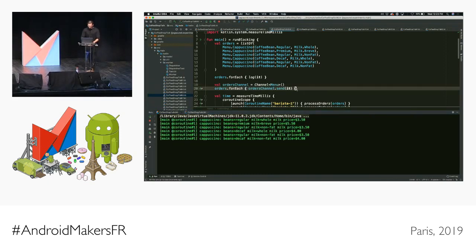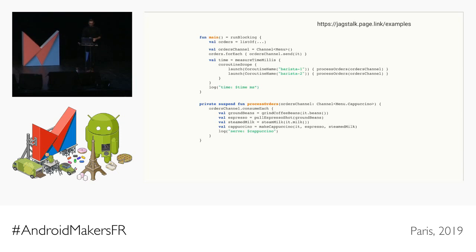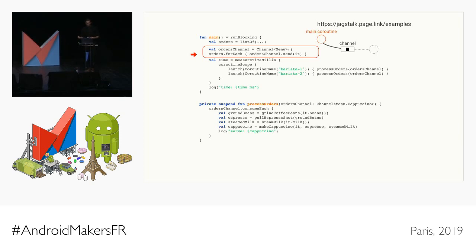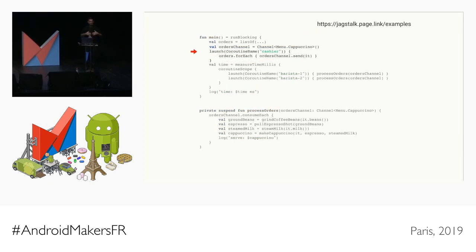To fix the deadlock, we launch a new cashier coroutine and inside that coroutine we start writing to the channel. When the cashier writes to the channel the first time, it suspends the cashier coroutine — but that means the main coroutine is free to continue operating. Running this new version, it looks a lot better: Barista 1 is processing a $3.50 order and Barista 2 is processing a different order. Except for one issue — the program isn't terminating. It's stuck at the end.